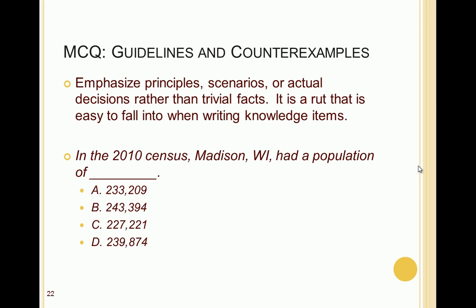Another point is to emphasize principles, scenarios, or actual decisions rather than trivial facts — a rut that's easy to fall into when writing knowledge items from a textbook or regulations. For example, 'In the 2010 census, Madison, Wisconsin had a population of ___' — even on a test about the geography of Wisconsin, this is trivial information. It doesn't really reflect comprehension of geography in the state of Wisconsin.